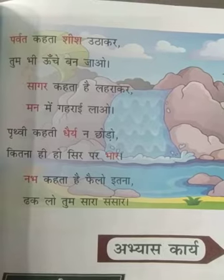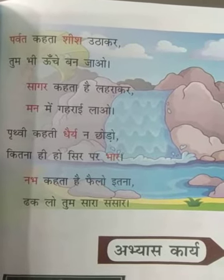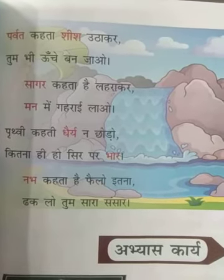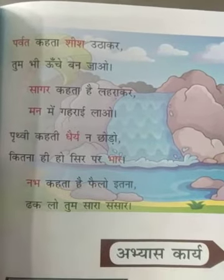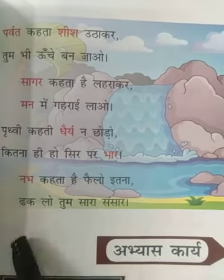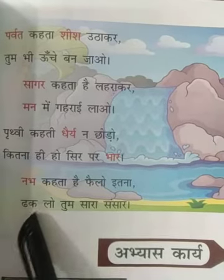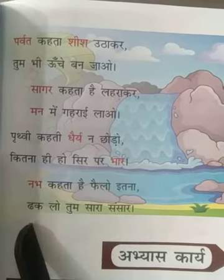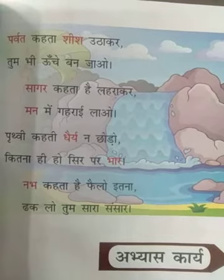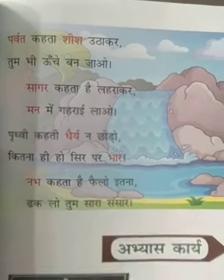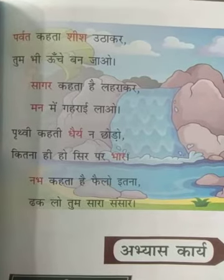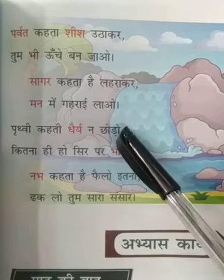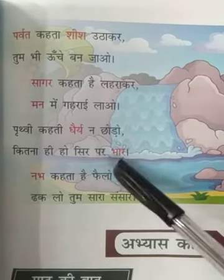Nab, yaniki aakash, sky. Nab yaniki aakash, aakash, sky, gaaghan, amber — kai saare naam hain nab ke. Nab kya kehta hai? Bichu hao mujhse, phelo tum itna ke dhako tum sara sansaar. Jis tarah se nab pura sansaar pe faila hua hai, usi tarah se tum phelo aur sara sansaar dhaak lo.